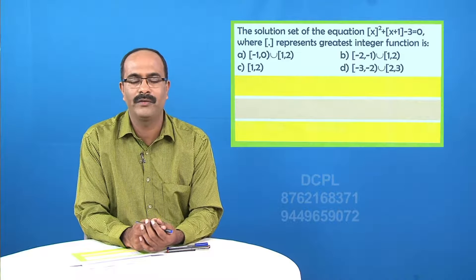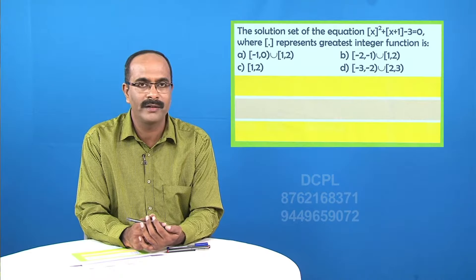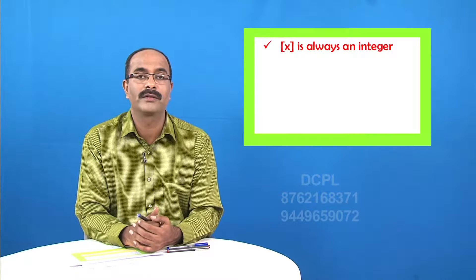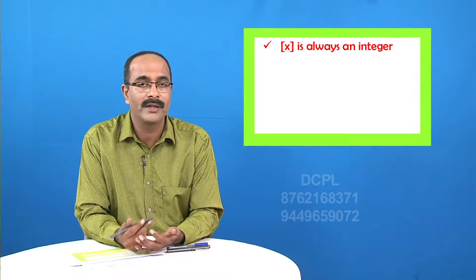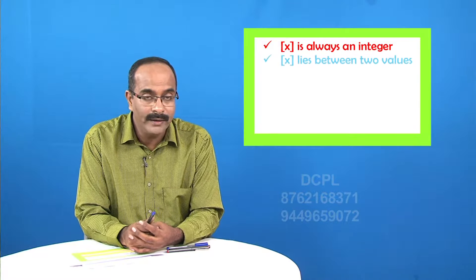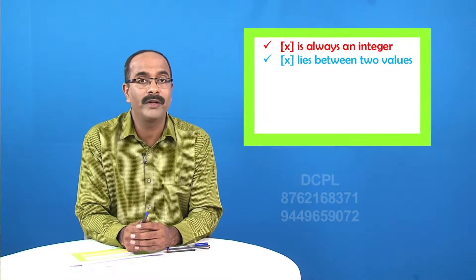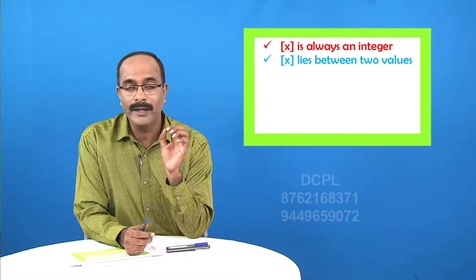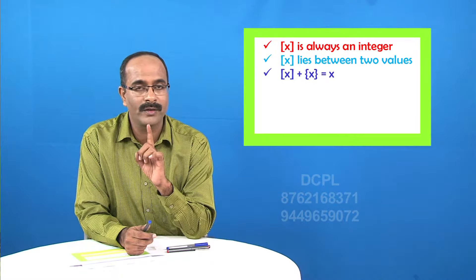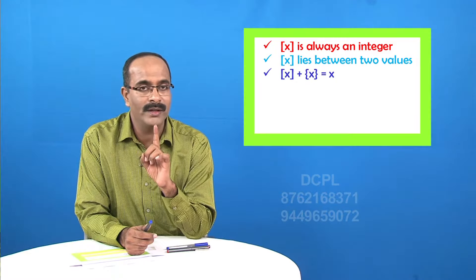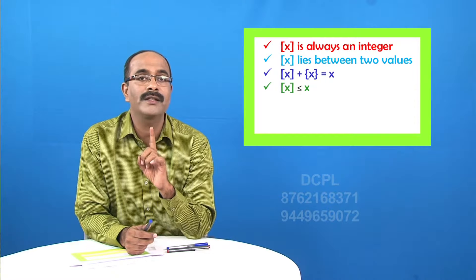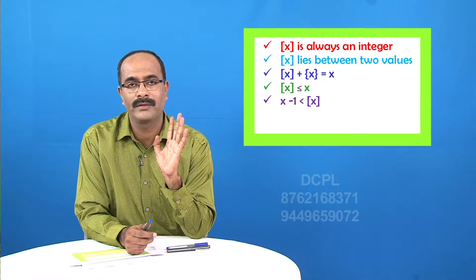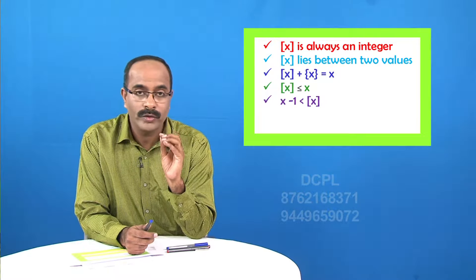Let us discuss a few more problems based on floor functions. The integral part of x is always an integer, and integral part of x lies between two values. Integral part of x plus fractional part of x equals x. This means integral part of x is always less than or equal to x, and greater than x minus 1.